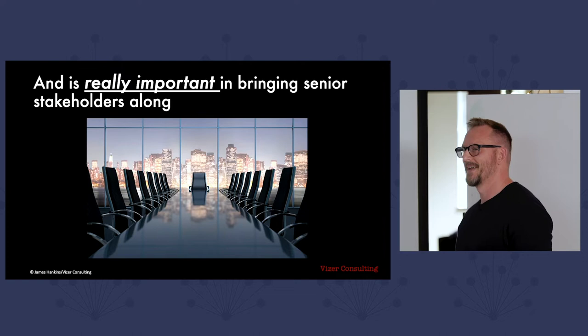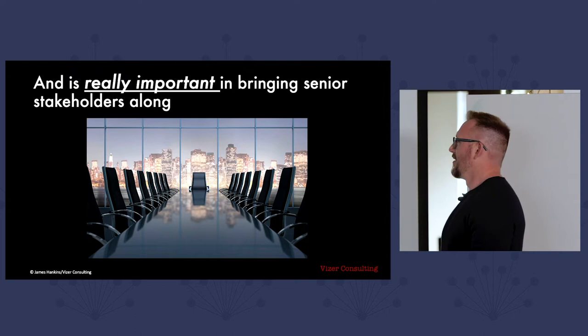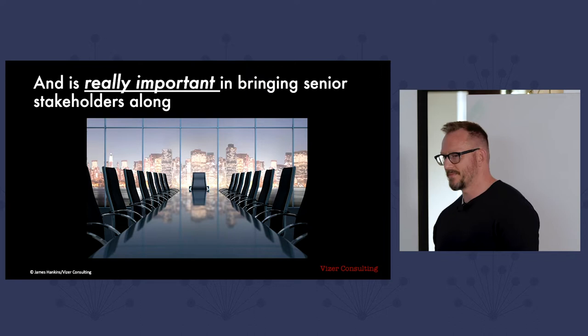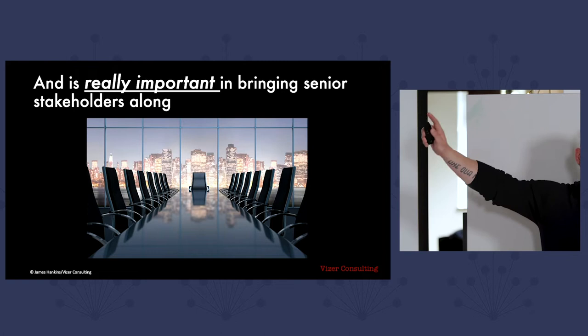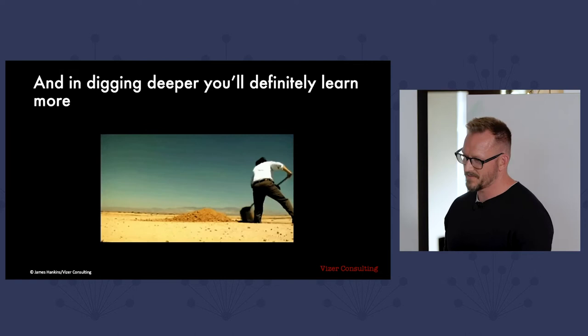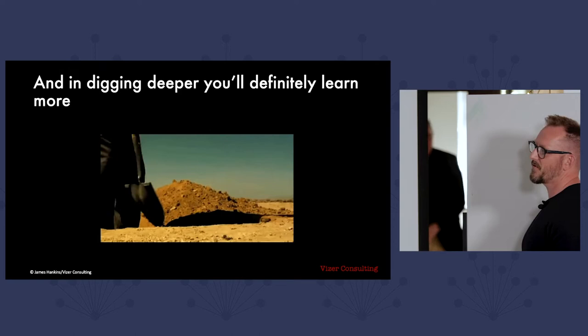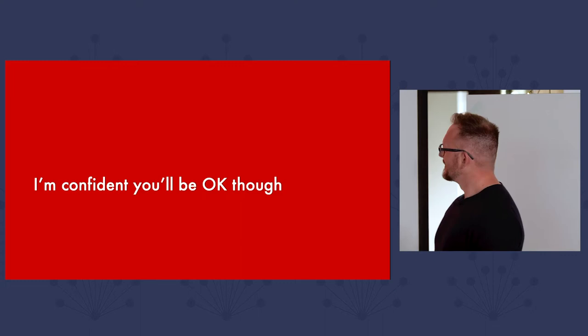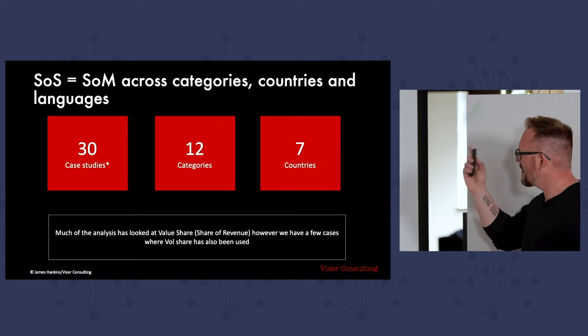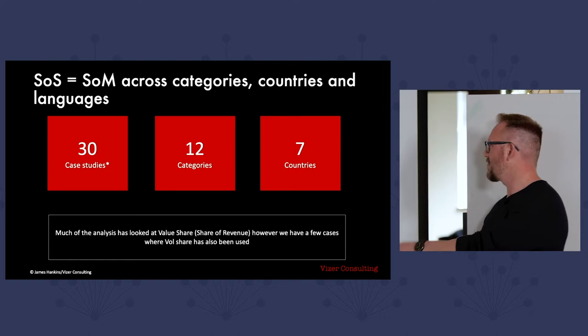You can see it happening — a marketer rocking up with Share of Search, showing the CEO 'our Share of Search is down,' and he's like, 'Yeah, that's not money, is it? What does that mean?' So validation is really important for bringing senior stakeholders along. In digging deeper, you'll learn something more about the category — you'll probably have to trawl through all your competitors' market reports, government reports, there's a lot of free stuff out there. The IPA, under the auspices of myself and Les, have done over 30 case studies across 12 categories, seven countries, three different languages. And we're getting information consistently coming through of other people who have validated this multiple, multiple times.